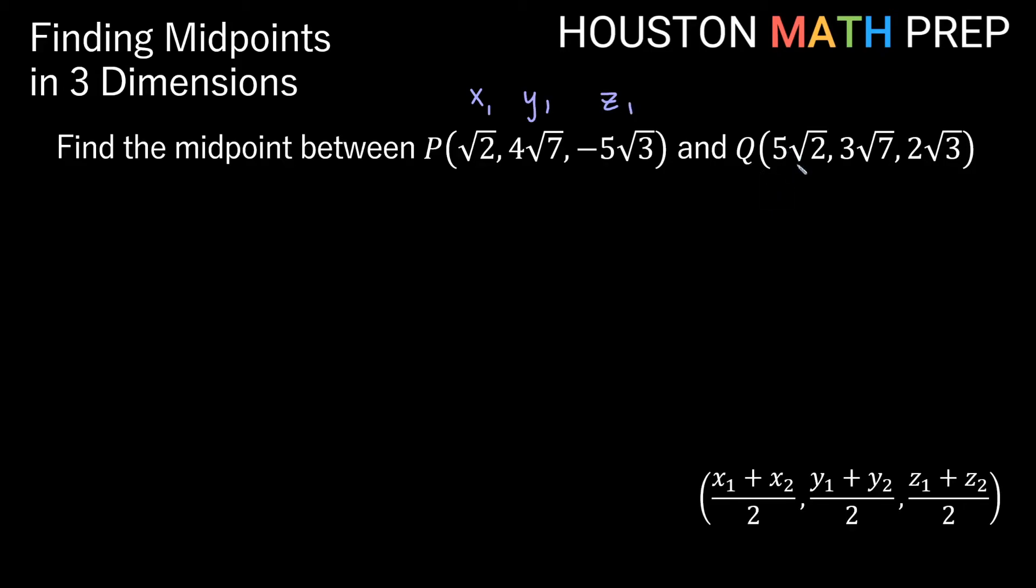And Q, our other point is 5 root 2, comma 3 root 7, comma 2 root 3. So that's our x2, y2, and z2. We want to find our midpoint.